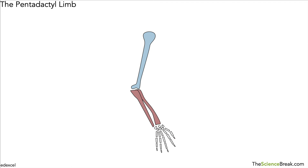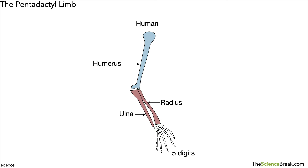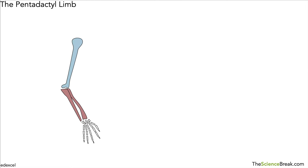Let's actually look at the bones of a human arm. We have the humerus at the top, and we have the radius and the ulna, and right at the bottom we have the five digits — the five fingers that perform all kinds of different tasks for humans. So it has the same basic structure as what we just looked at in the previous diagram.